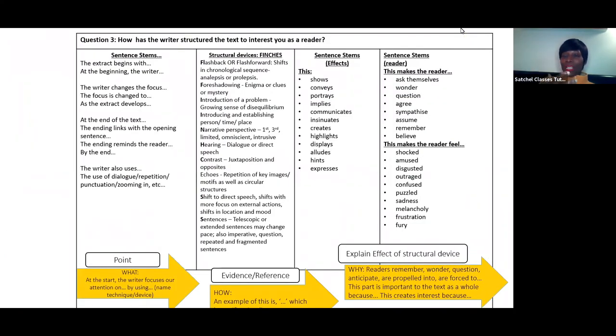A way of looking at this is point, evidence, and explain. What's your point? At the beginning, this is what the writer is using. What's the evidence? The writer is using these different aspects: flashback, foreshadowing, dialogue, contrast, motifs. And then what is this showing? What's the effect? The writer is trying to create this at this point—trying to force us to remember or create a sense of outrage or make us puzzled or create a sense of frustration. You're making your point about what's happening in the beginning, middle, and end. You're using your evidence with this quotation, and then you're explaining the effects. Point, evidence, and explain.